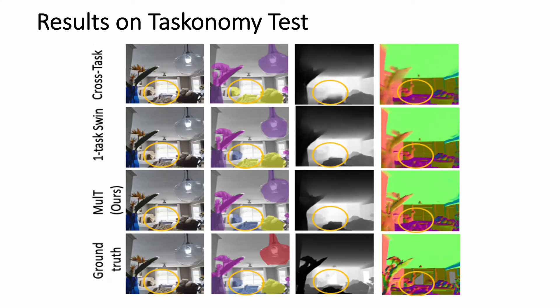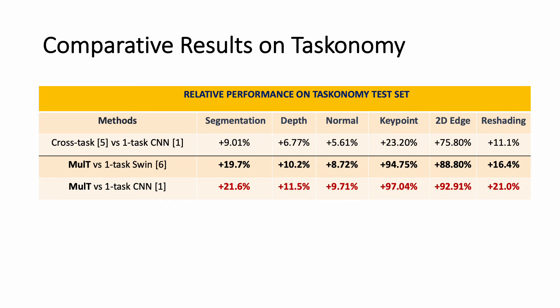Our qualitative results show that Multi outperforms both the single-task SWIN baselines and the multi-task CNN baselines across the tasks of segmentation, depth, and surface normal estimation. Quantitative comparison of our Multi model with baselines when jointly trained for six tasks on the Taskonomy benchmark demonstrates that our Multi model consistently outperforms all the baselines, including the cross-task CNN baseline, the single-task CNN, and the single-task SWIN transformer baseline.